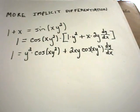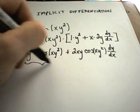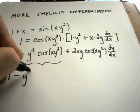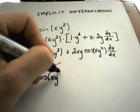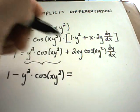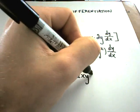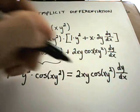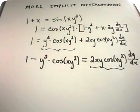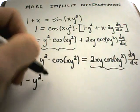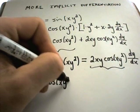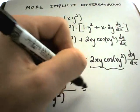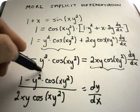Okay, so I'm just distributing that term to each piece. And the idea is you want to get everything that has a dy/dx on one side. So, I need to subtract away this term, y squared cosine xy squared. So, on the left side, I'll have 1 minus y squared times cosine of xy squared. On the right side, I still have my 2xy cosine xy squared dy/dx term. And now, to get my dy/dx term, I'll simply divide by the 2xy cosine xy squared term.